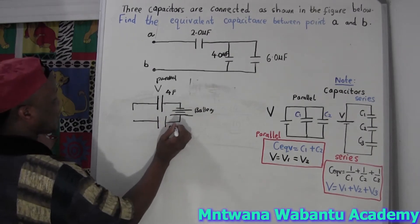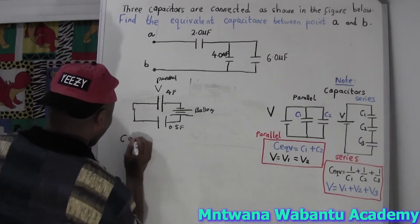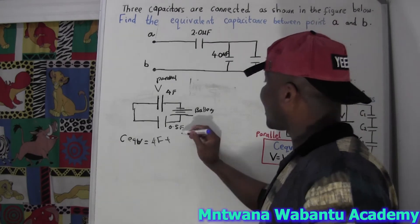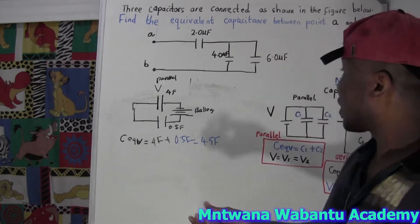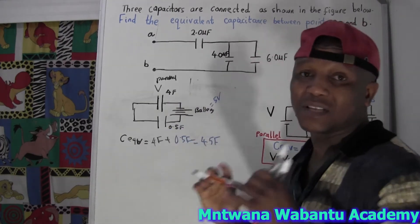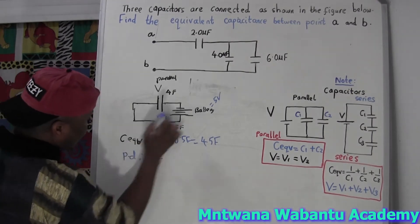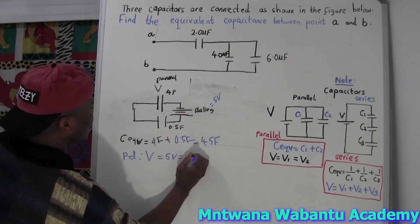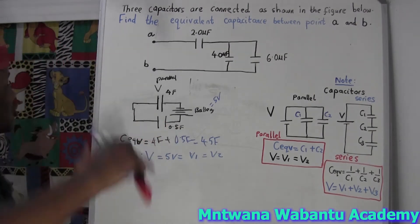Let's get the equivalent capacitance for these two parallel capacitors: C_eq = 4 farads + 0.5 farads = 4.5 farads. Now if they give us a potential difference of 5 volts, since these capacitors are parallel, the PD is the same across both. So the potential difference across the first capacitor equals that across the second — V1 = V2 = 5 volts.